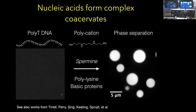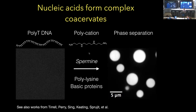Moving back to nucleic acids: nucleic acids are charged, and if one mixes DNA or RNA with an appropriate polymeric cation, one observes complex coacervation. Here I'm showing one example where I've taken single-stranded DNA — poly-T. The DNA is labeled but it's a homogeneous solution, so you don't see any inhomogeneities. If you mix it with a polycation like spermine — a metabolite present in virtually all cells — basic peptides, polylysine, or supercharged GFP, you end up with a DNA-rich phase and a DNA-poor phase. We observe about a thousand-fold enrichment of DNA in the condensed phase.